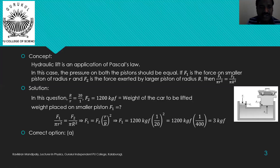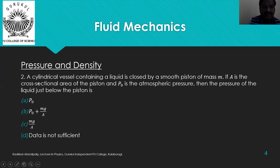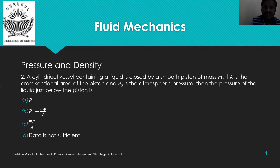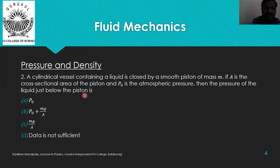Question two: A cylindrical vessel containing a liquid is closed by a smooth piston of mass m. If A is the cross-sectional area of the piston and p0 is the atmospheric pressure, then the pressure of the liquid just below the piston is: (a) p0, (b) p0 + mg/A, (c) mg/A, (d) data is not sufficient.